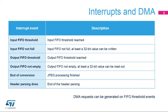Output FIFO threshold and output FIFO not-empty flags are used to manage the output FIFO, either by the CPU or DMA. End of conversion flag indicates the end of the JPEG process. Header parsing done flag indicates the end of the header parsing operation.